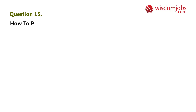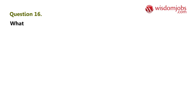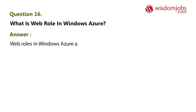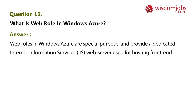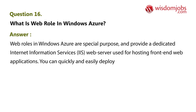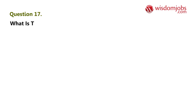Question 15: How do you programmatically scale out Azure Worker Role instances? Answer: Using the Auto Scaling Application Block. Question 16: What is a Web Role in Windows Azure? Answer: Web Roles in Windows Azure are special-purpose and provide a dedicated Internet Information Services (IIS) web server used for hosting front-end web applications. You can quickly and easily deploy web applications to Web Roles and then scale your compute capabilities up or down to meet demand.